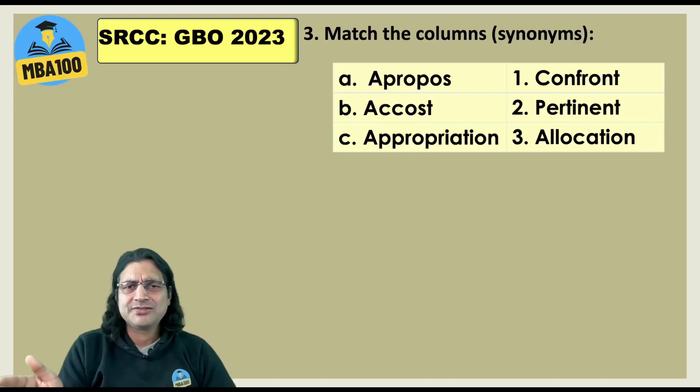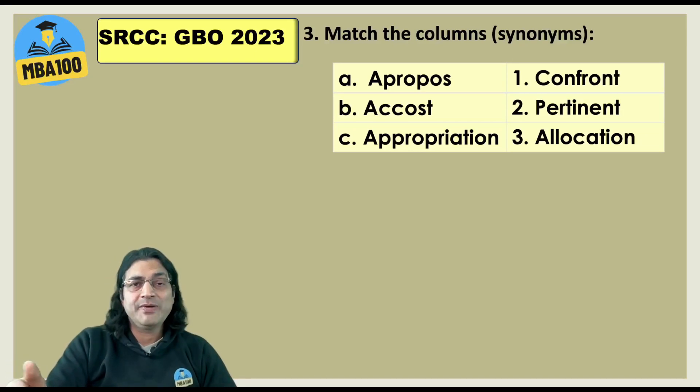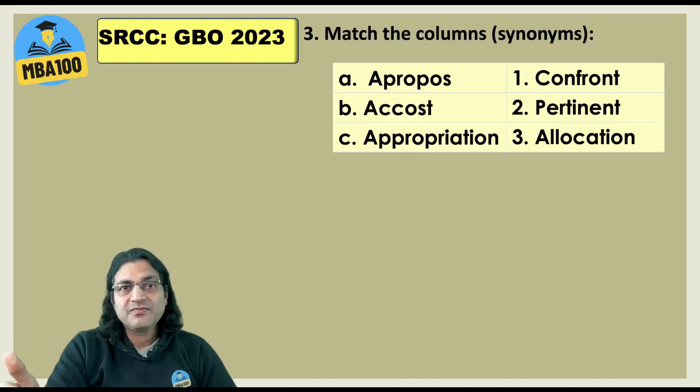What about this one? You have to match the synonyms. So appropriation is allocation. Almost everyone knows. Accost. If you accost someone you confront the person. Like you would be accosting me if the cutoff for general category for this test goes above 300. Because my prediction is that should stay around 300. Below 300 actually. Apropos is pertinent. So this is your answer.